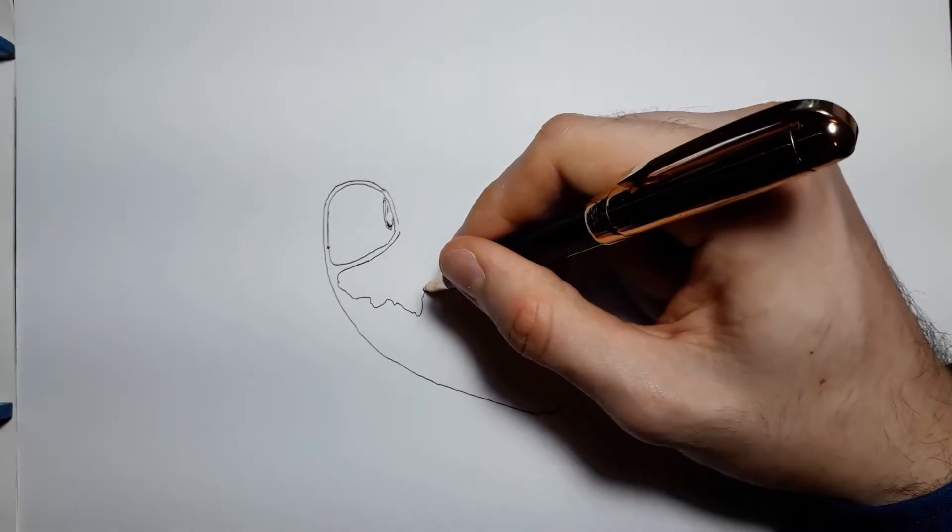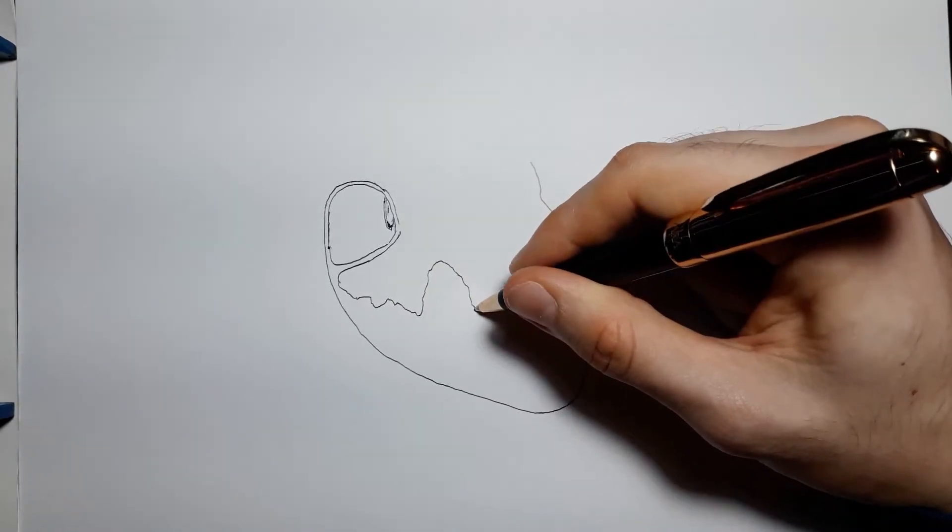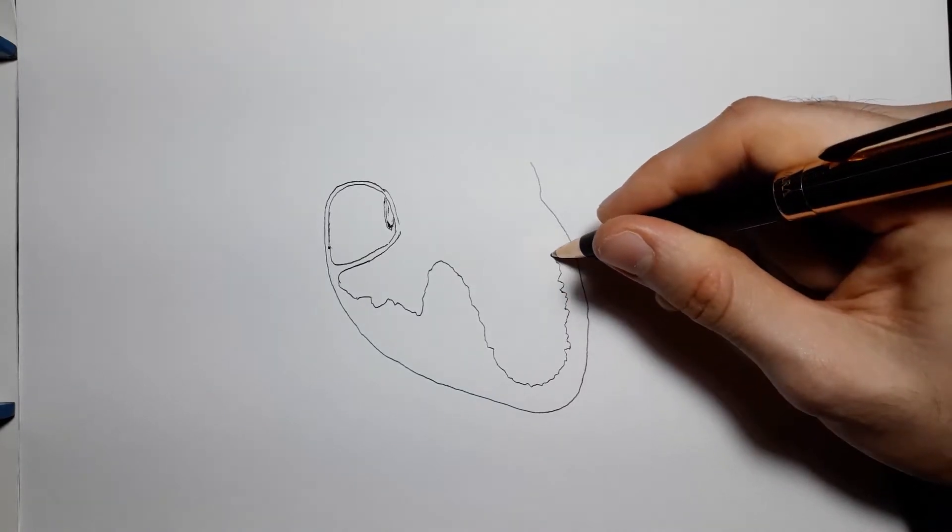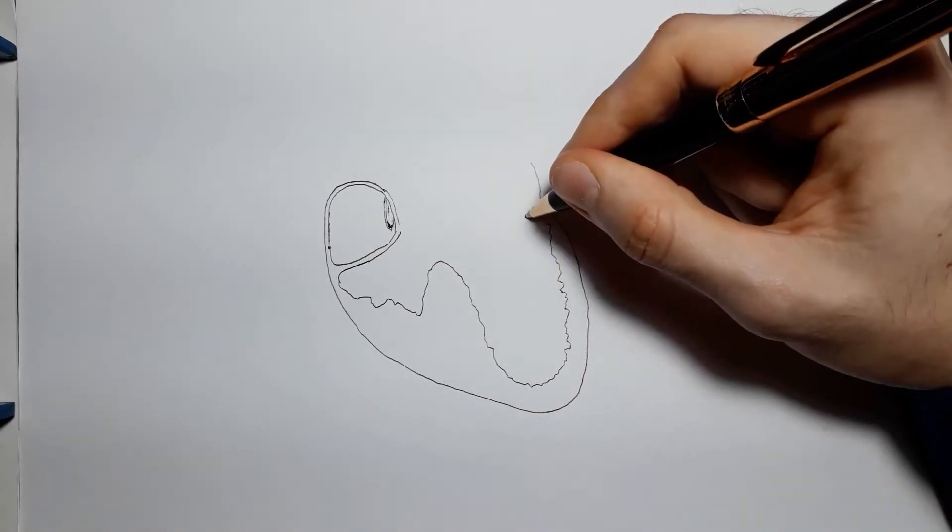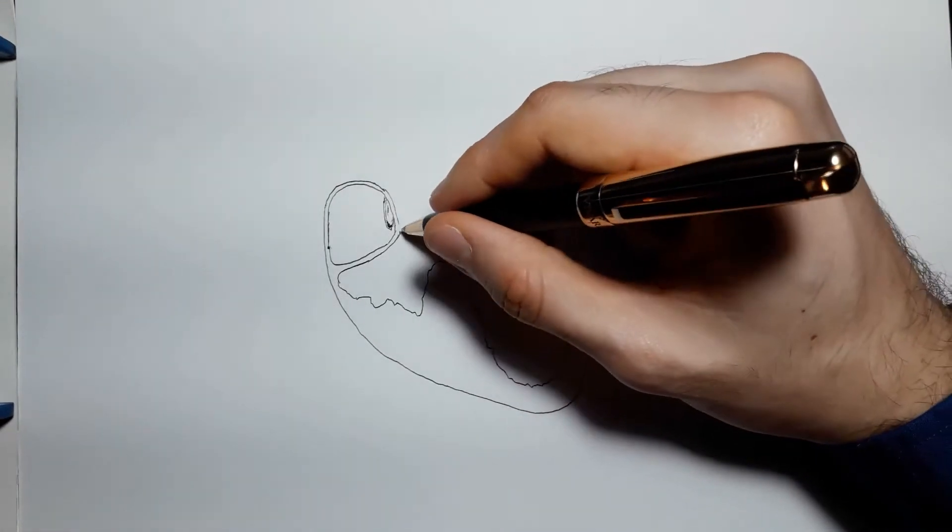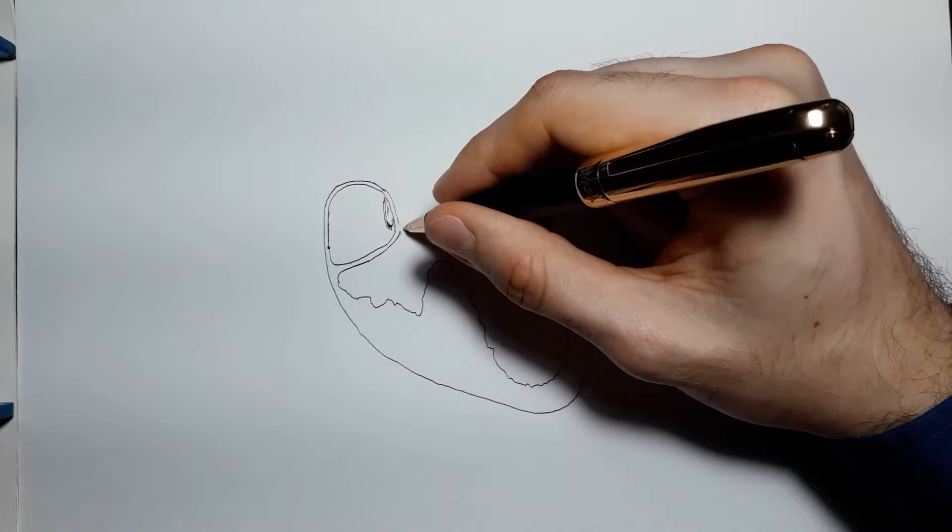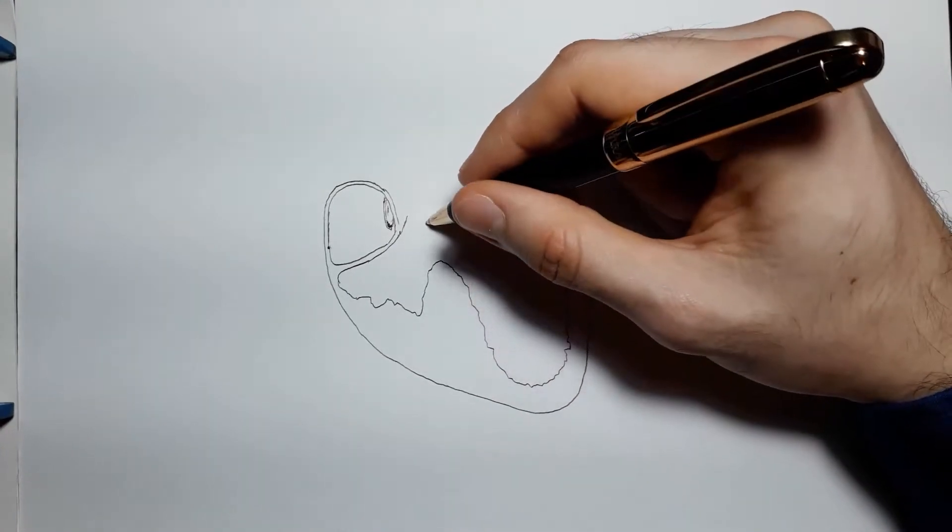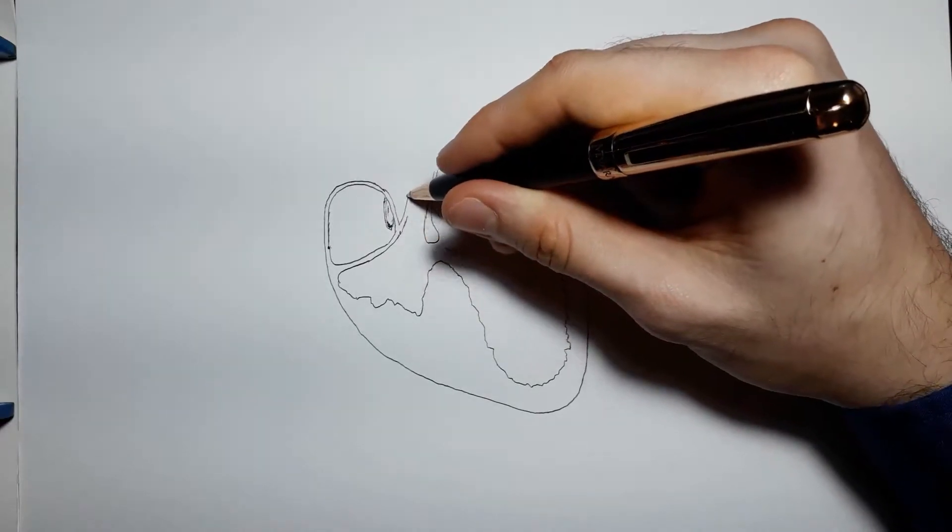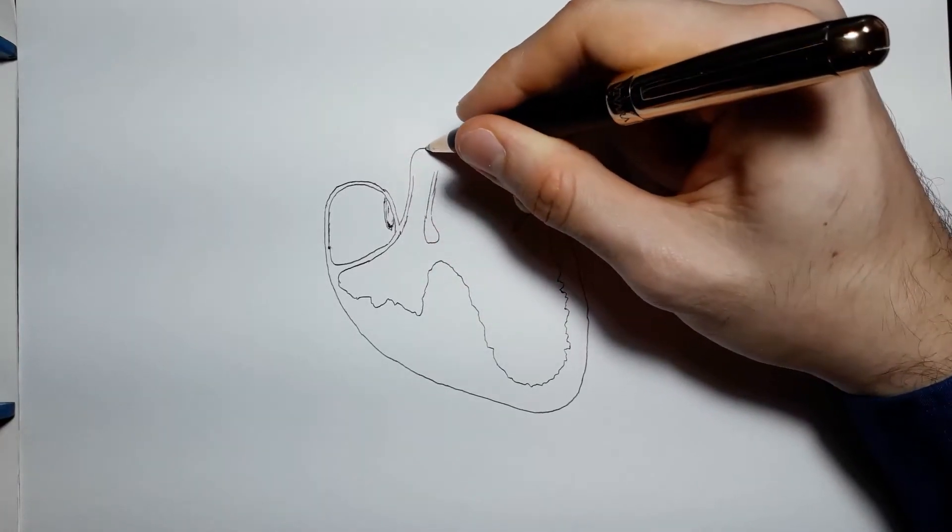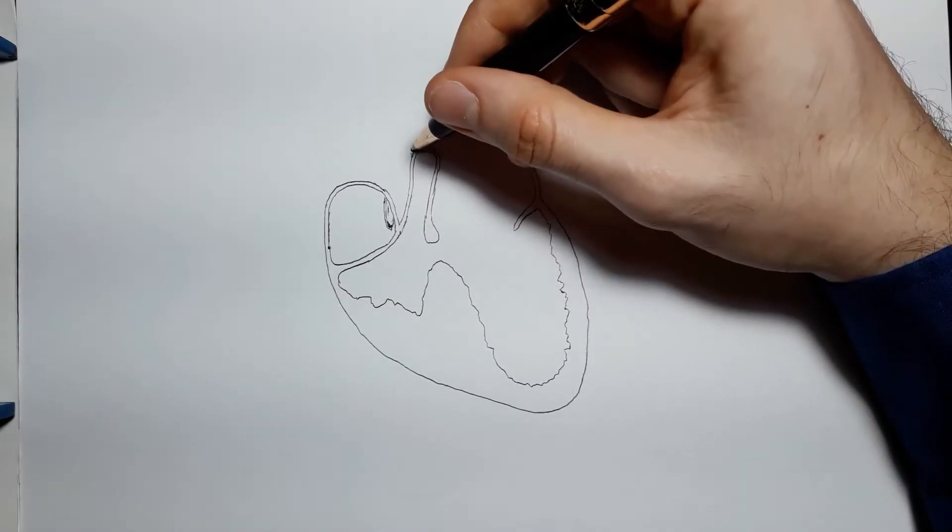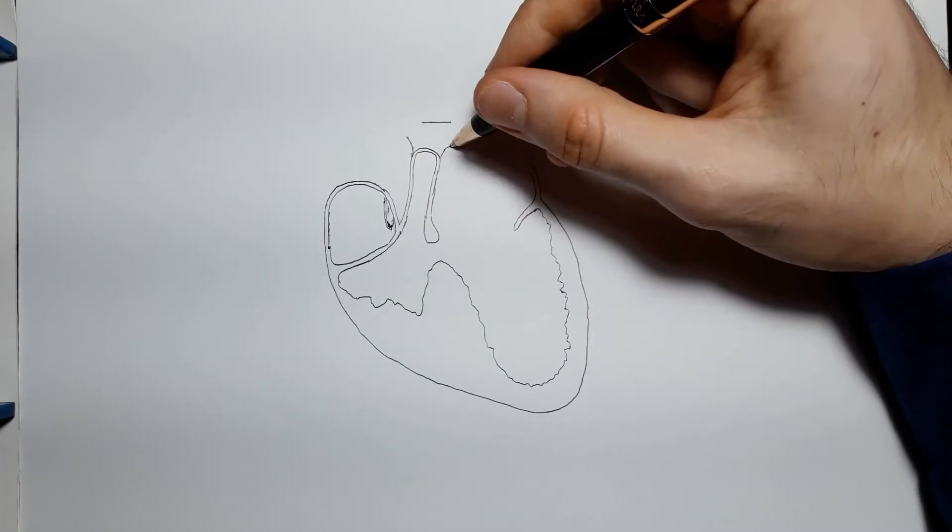But that would be actually missing the point because, as I quickly found out, tricuspid atresia does not mean that there is no tricuspid valve and that there is a hole in its place. Tricuspid atresia means that there is no tricuspid valve and that there is a wall in its place. In fact, tricuspid atresia is more like tricuspid stenosis, much like a more severe case of tricuspid stenosis.